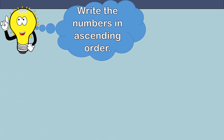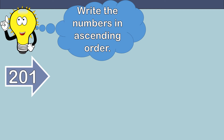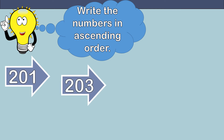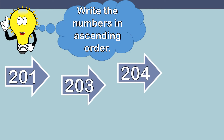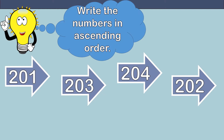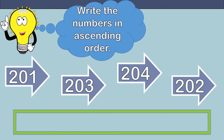You all did such an awesome job with that last practice question. I know this is going to be a piece of cake. Help me write the numbers in ascending order. Read the numbers: 201, 203, 204, 202. Remember, when we write numbers in ascending order, begin with the smallest number and end with the biggest number.